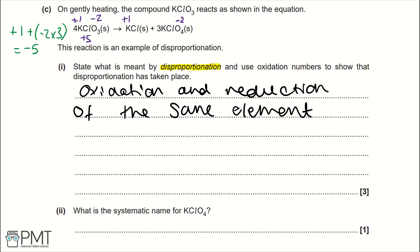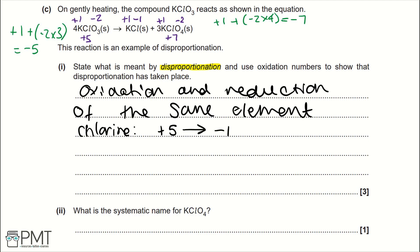For the products: in KCl, chlorine has a -1 oxidation state. For the next product KClO₄, we have +1 plus (-2 × 4), which gives -7, making the oxidation state of chlorine +7. So we can say chlorine goes from +5 to -1 in one product, and +5 to +7 in the other.